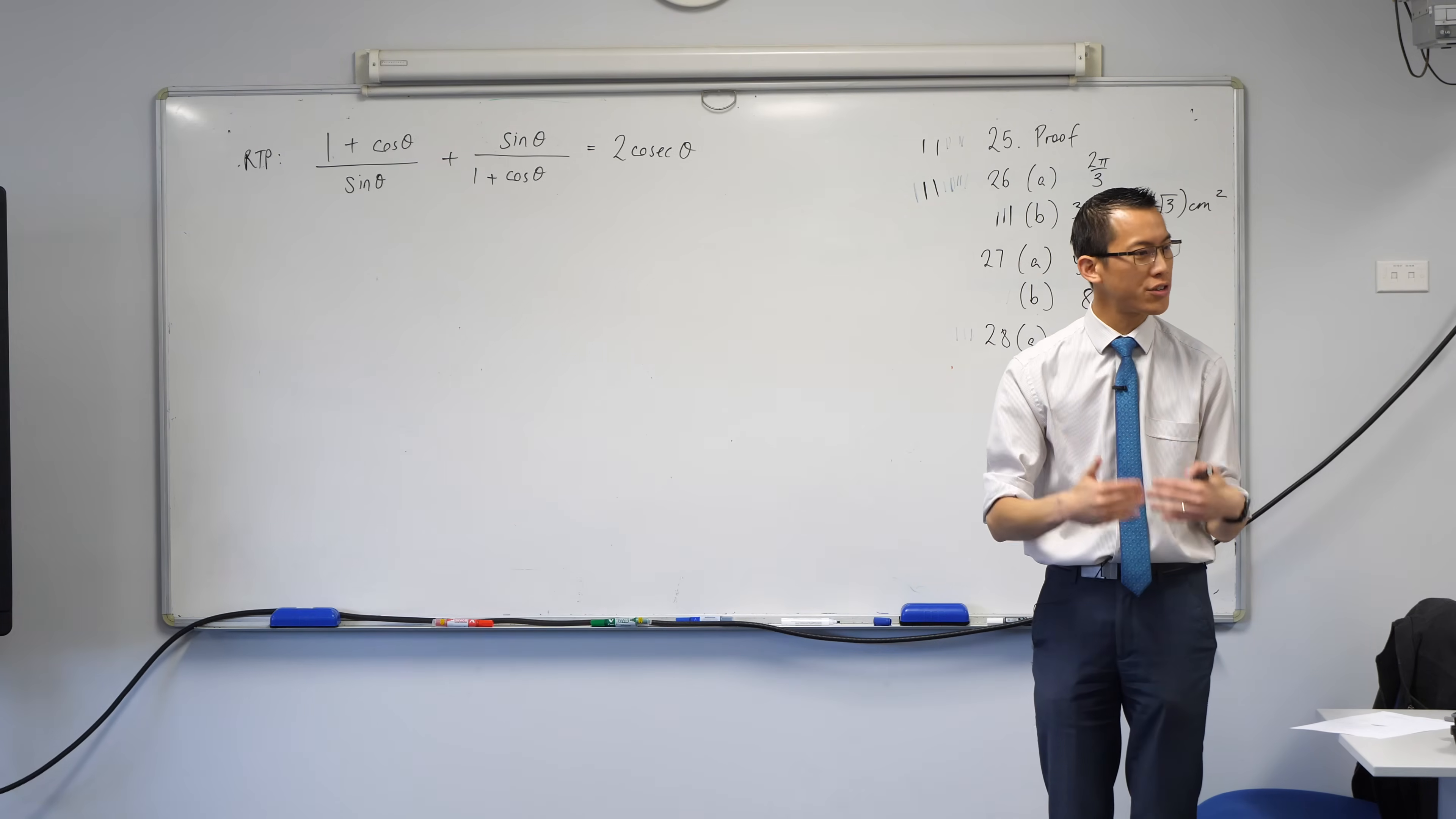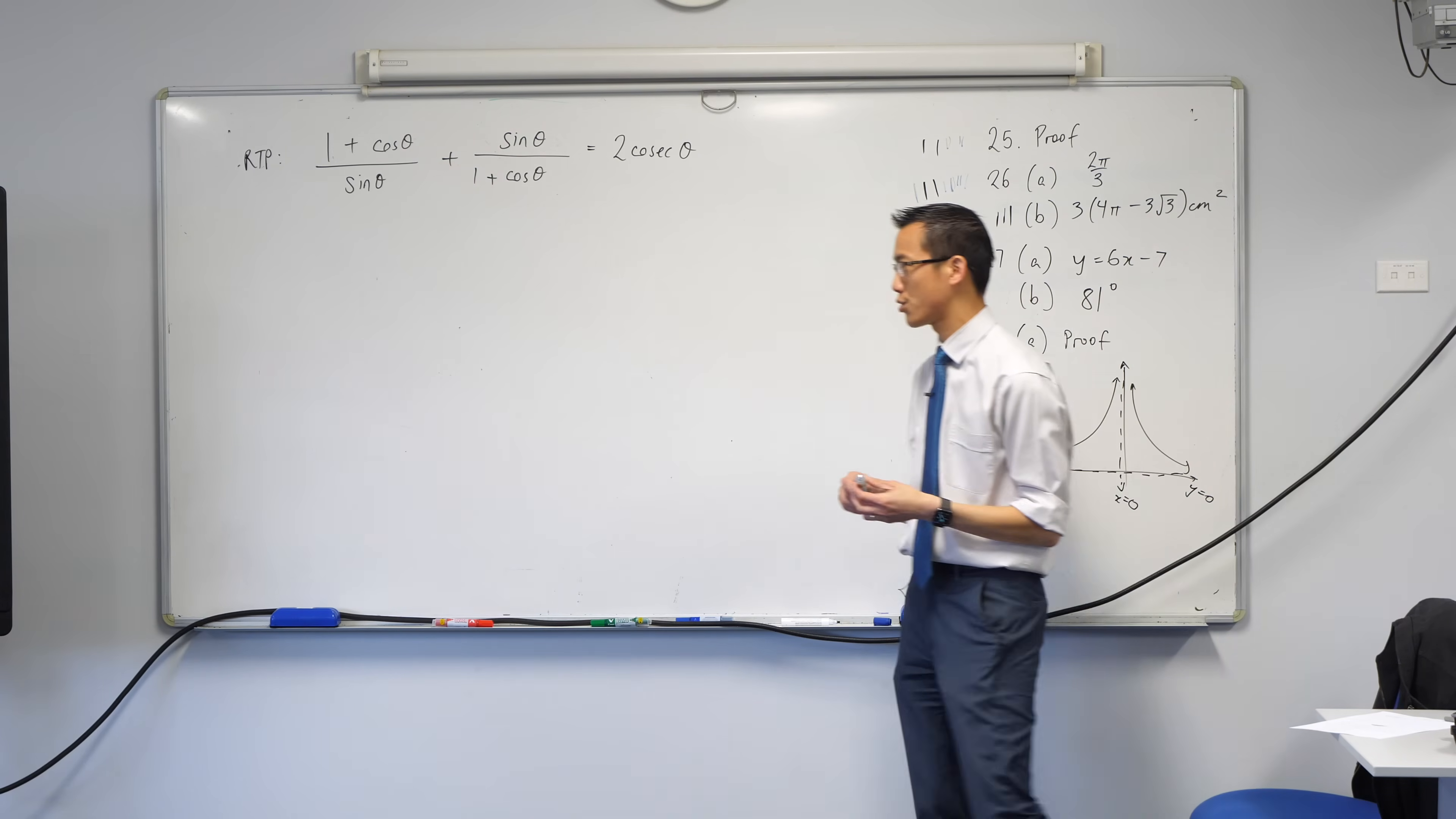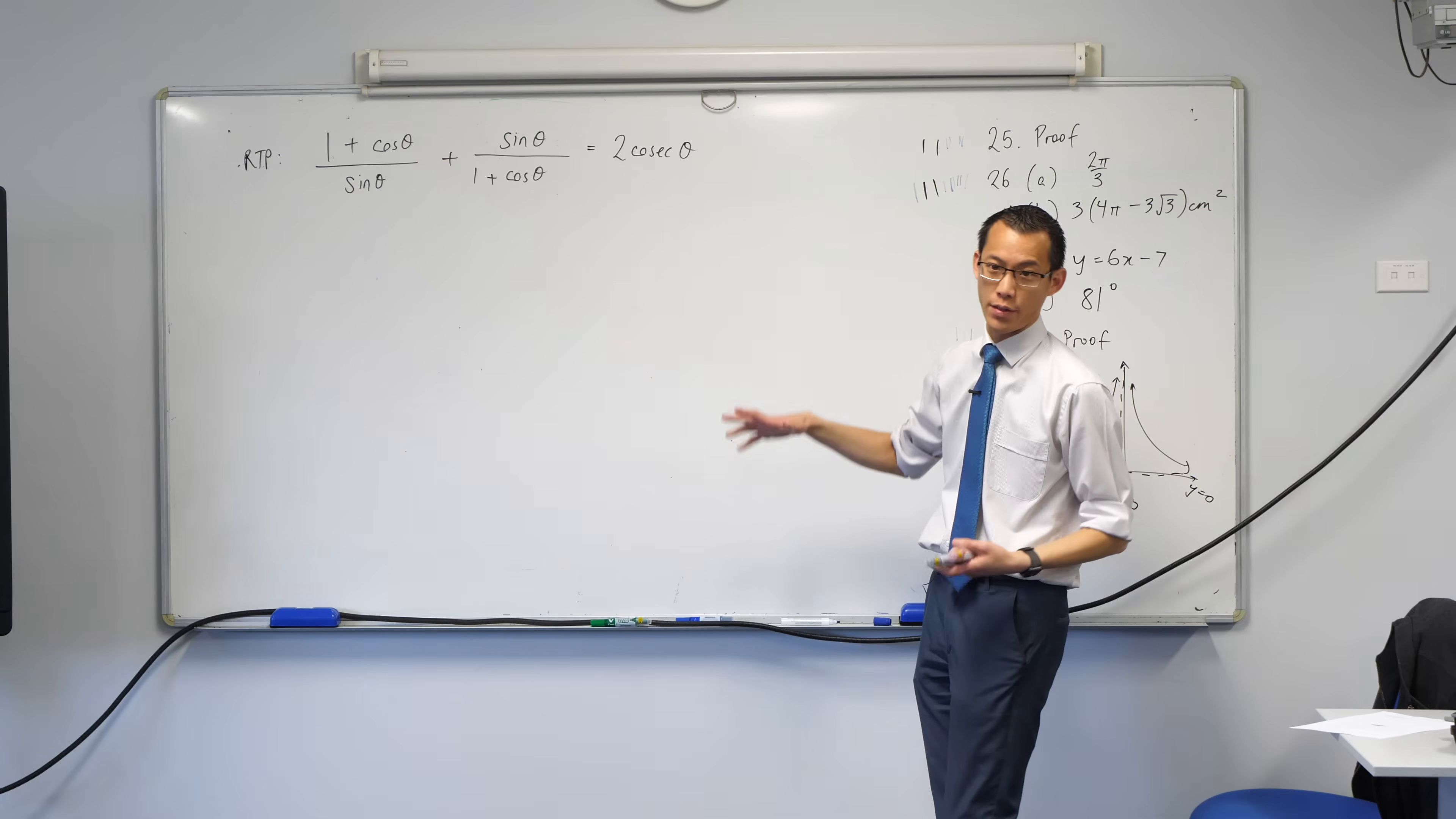Let's have a look at this trigonometric identity proof together. Now, when you have a look at this, part of what is just messy is all these fractions flying around.